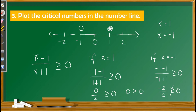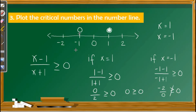Since there are two critical numbers, negative 1 and positive 1, the number line is divided into three intervals. The first interval represents x less than negative 1. The second interval is between negative 1 and positive 1, so x is greater than negative 1 but less than or equal to positive 1, since that point is included. The third interval is from 1 going right, giving us x is greater than or equal to 1. These are the three intervals needed for the next step.